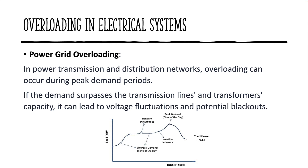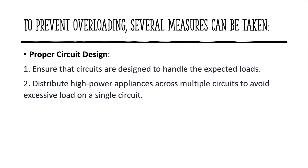Power grid overloading can occur in power transmission and distribution networks during peak demand periods. If the demand surpasses the transmission lines' and transformers' capacity, it can lead to voltage fluctuations and potential blackouts.